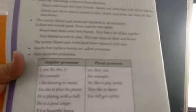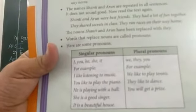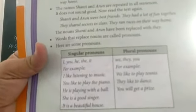Here are some pronouns. We have singular and plural pronouns. Singular pronouns: I, you, he, she, it. For example: I like listening to music; you like to play the piano; he is playing with a ball; she is a good singer; it is a beautiful house. Plural pronouns: we, they, you. For example: we like to play tennis; they like to dance; you will get a prize.